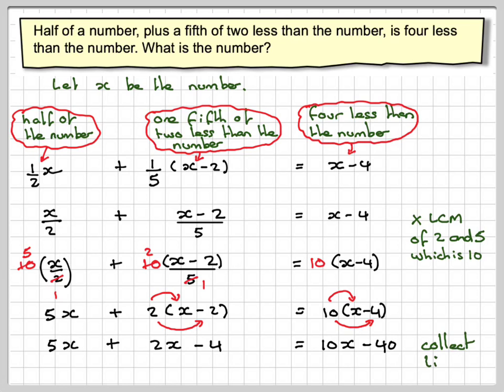Collecting like terms, 5x plus 2x gives 7x minus 4, and on this side we've got 10x minus 40. So we've reduced it to an equation which we can now solve.